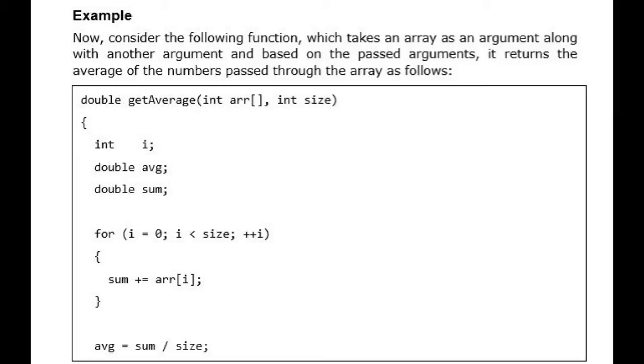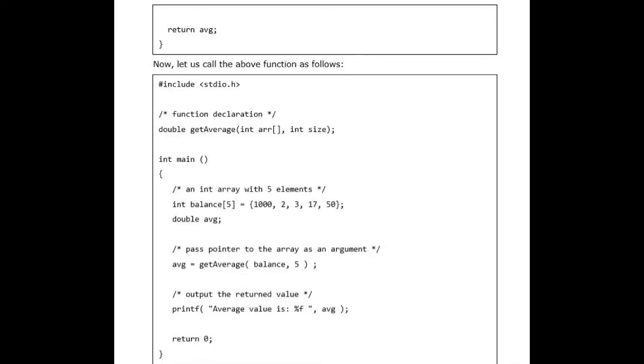int balance[5] = {1000, 2, 3, 17, 50}; double avg; /* pass pointer to the array as an argument */ avg = getAverage(balance, 5);